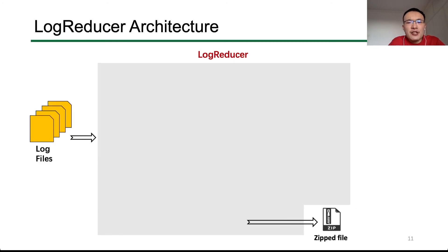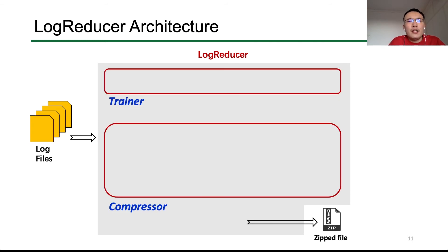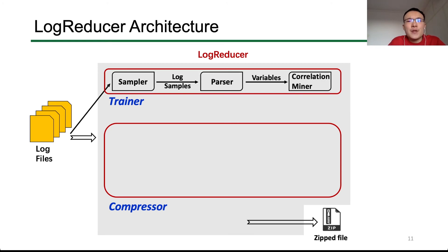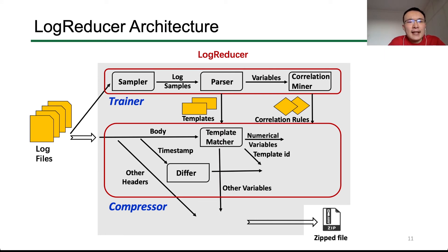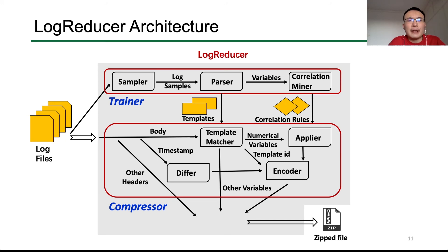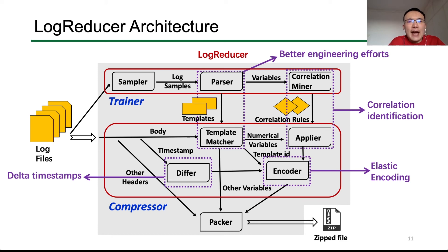Now let's look at the architecture of Log Reducer, which includes two phases: training and compression. During the training phase, we parse a sample of system logs and use its variables to mine correlation rules. The output is log templates and correlation rules. During compression, we divide log files into head and body, encode time steps in the head by differential encoding, match the body to templates to produce template IDs and variables, apply correlation rules, and encode the results by elastic encoding. Finally, we pack everything with a general-purpose compression method to get the final result.